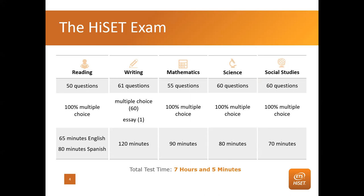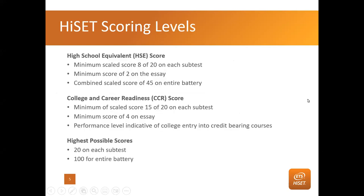The HISET is five subtests: reading, writing, math, science, and social studies. There are between 50 and 61 questions on each subtest, and all of the questions, except the essay, are single-response multiple choice. Today we're going to focus on that one outlier — the written subtest. If you do not write an essay, you cannot pass it, and you have to write an essay that scores a minimum of two out of six possible points. Today I'm going to show you how to get students to write what we call a college and career readiness level essay — a four out of six.